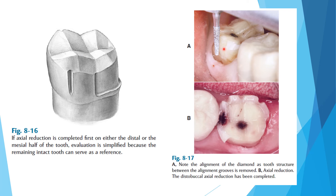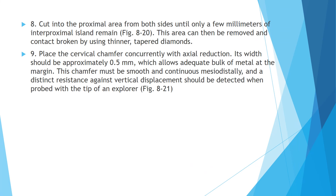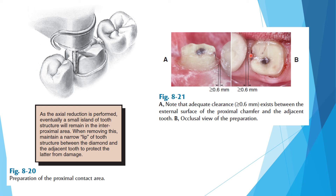Cut into the proximal area on both sides until only a few millimeters of the interior proximal island remains. This area can be removed and the contact broken using a thinner (needle-shaped) tapered diamond; the unsupported enamel can then be broken out with a probe. The cervical chamfer is placed concurrently with axial reduction — its width is approximately 0.5 mm to allow adequate bulk of metal. The chamfer must be continuous and smooth throughout.